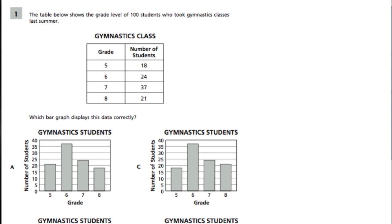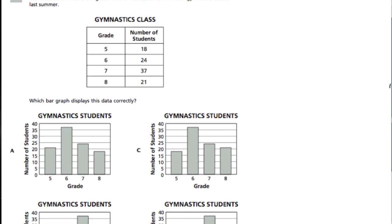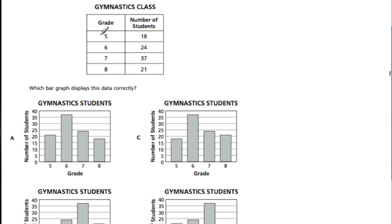Here we have a frequency table with grade and number of students per grade, and they want to know which graph displays this information best. These are bar graphs because the bottom has categories — grade numbers. Let's note that seventh grade should be the highest. I don't need to memorize it's exactly 37; I just need to know it's higher than the others.